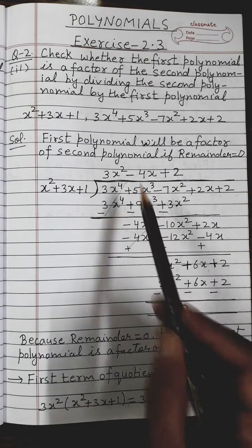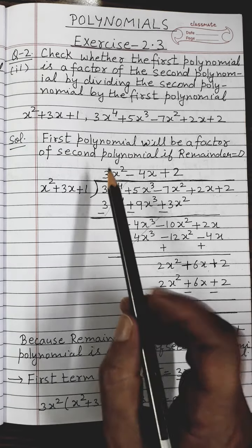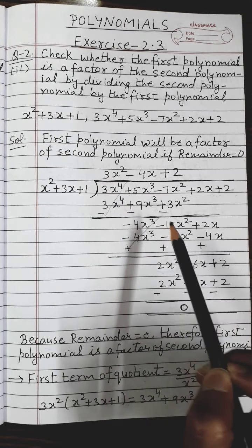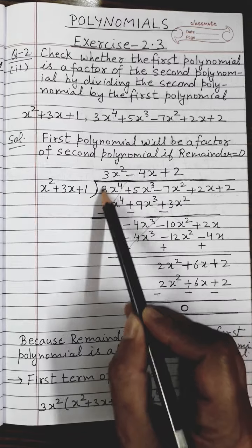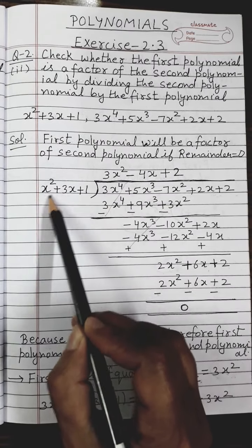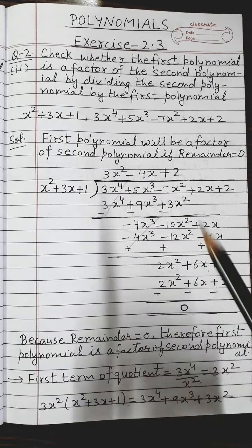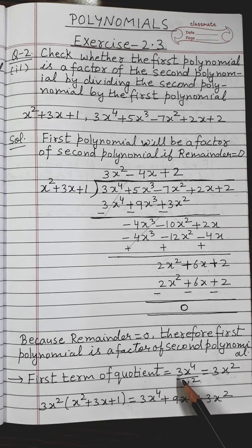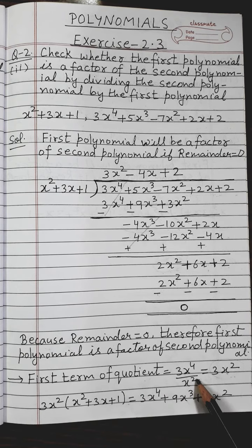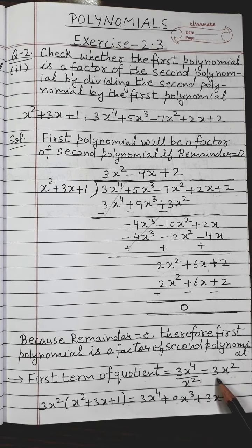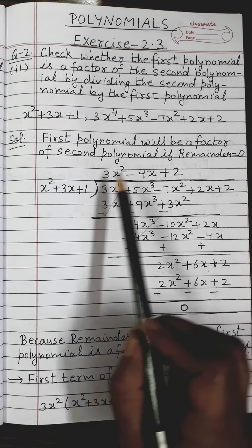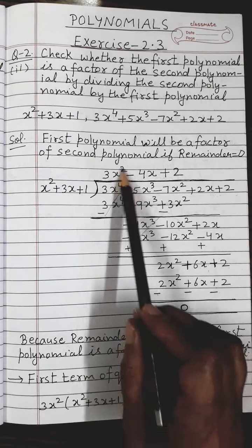So let us come to our division process. To obtain the first term of the quotient, I divide the first term of the dividend by the first term of the divisor. So the first term of the quotient equals 3x⁴ divided by x², which gives you 3x². I write down 3x² on the quotient side.